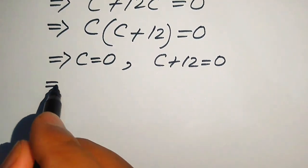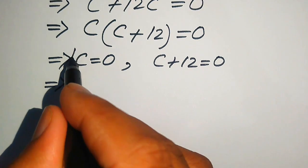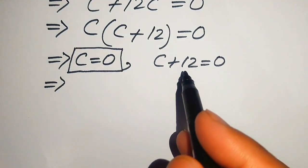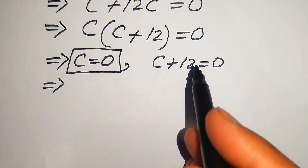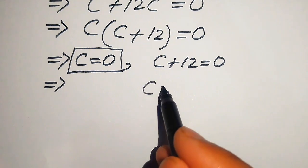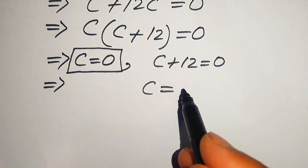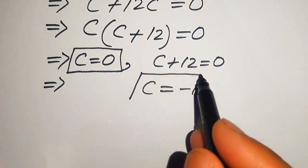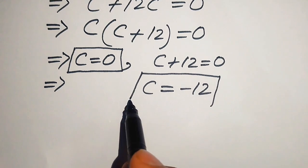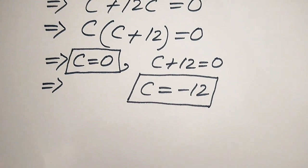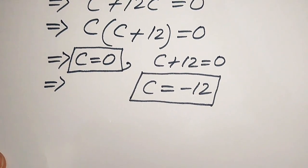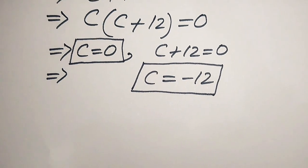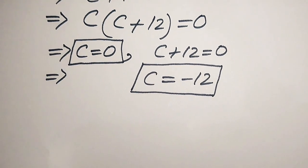From the first case we easily get c = 0. From the second case, we move 12 to the right hand side, and since it is positive 12, it becomes minus 12. So the two final solutions from the first method are c = 0 and c = −12.